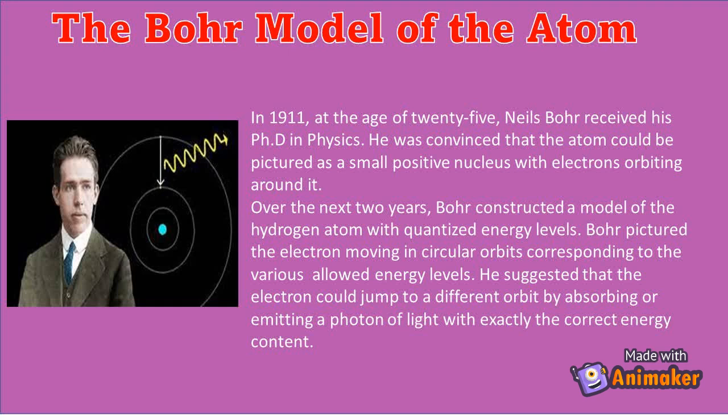Bohr pictured the electron moving in circular orbits corresponding to the various allowed energy levels. He suggested that the electron could jump to a different orbit by absorbing or emitting a photon of light with exactly the correct energy content.